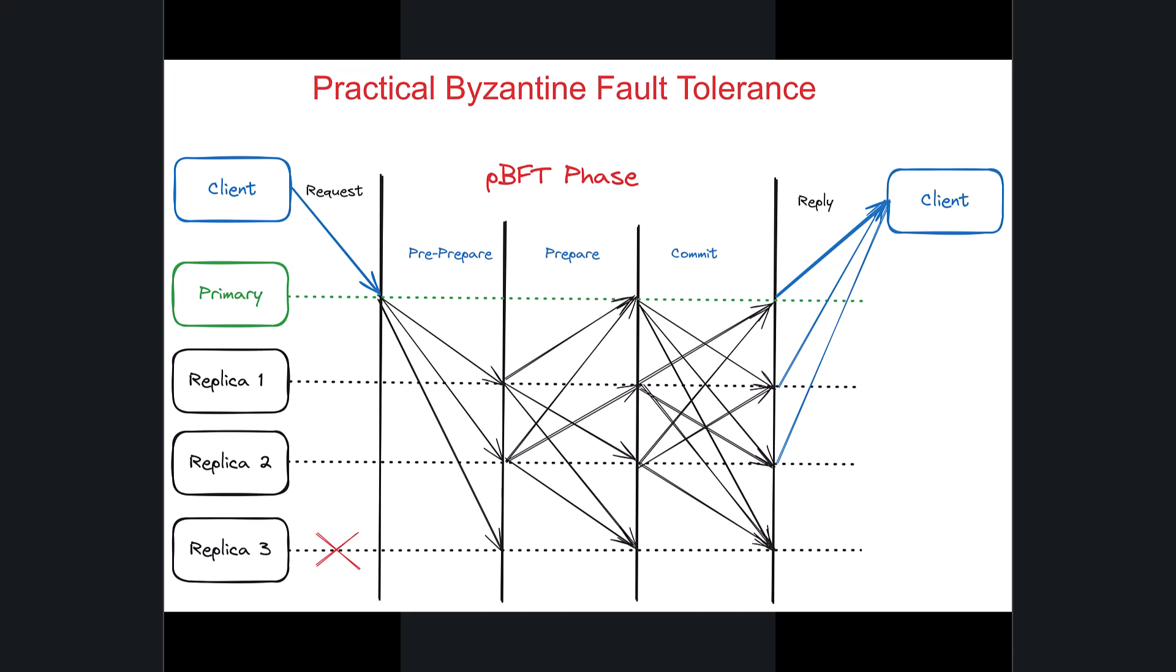In the commit phase, after receiving prepare messages from a two-thirds majority of nodes, a node broadcasts a commit message indicating that it has reached a consensus on the proposal block. Lastly, in the reply phase, the client will receive the message from the other nodes.